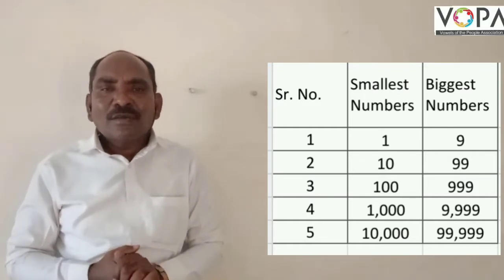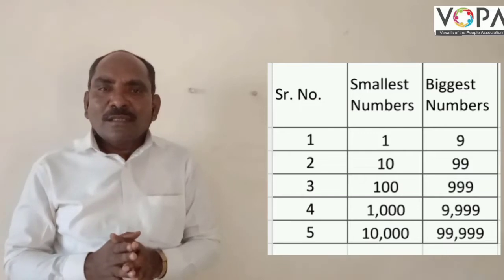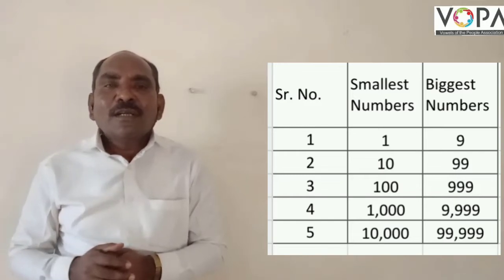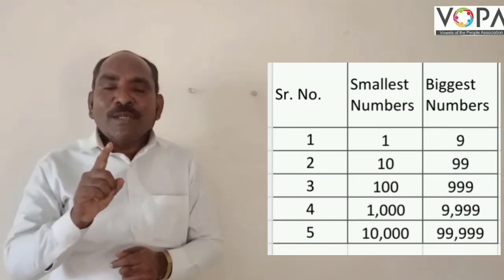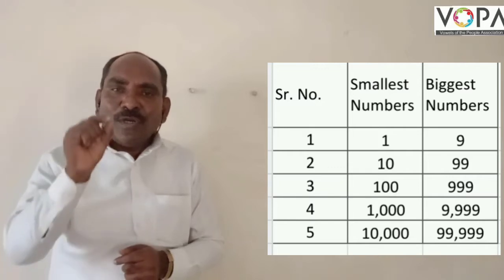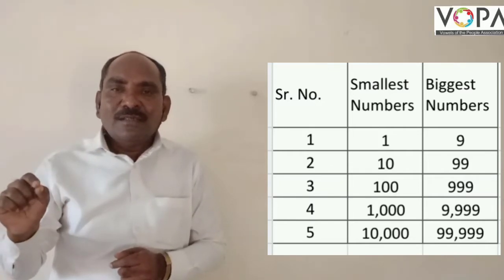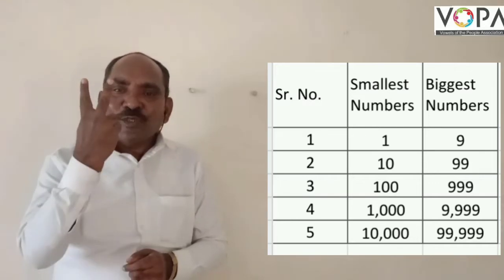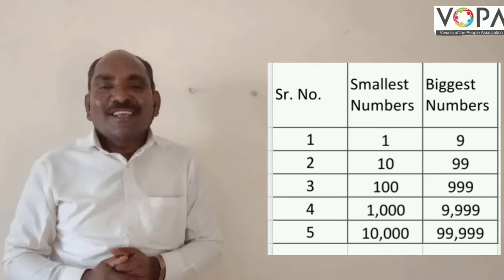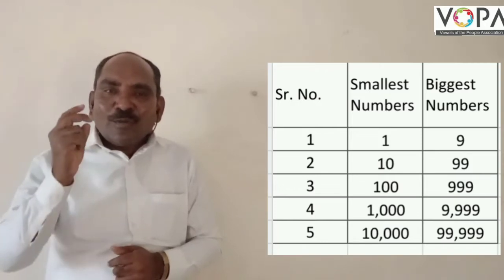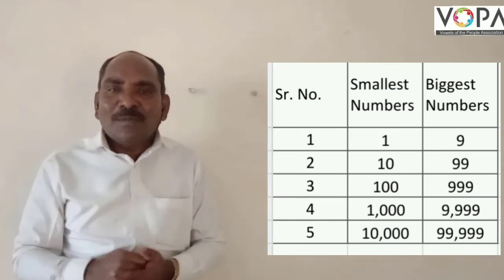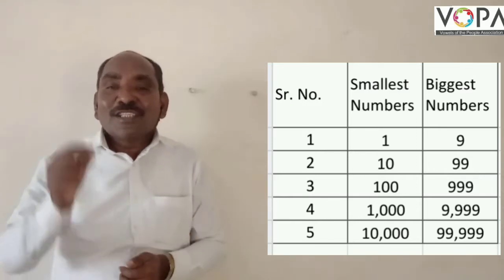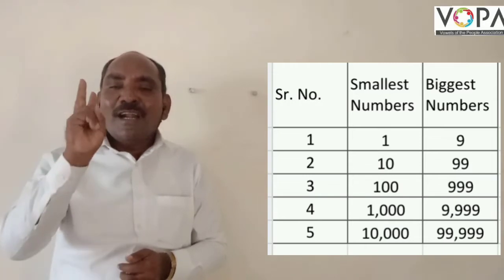In the 10s — how do we get 10? 9 is the biggest number. If you add only 1 unit to that biggest number, you get 10. That means a 2-digit number. The smallest 2-digit number is the number 10.